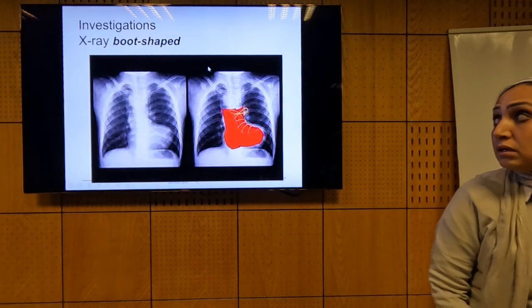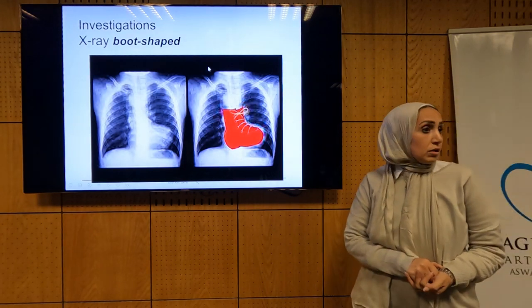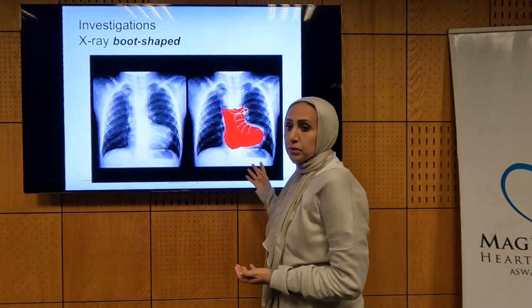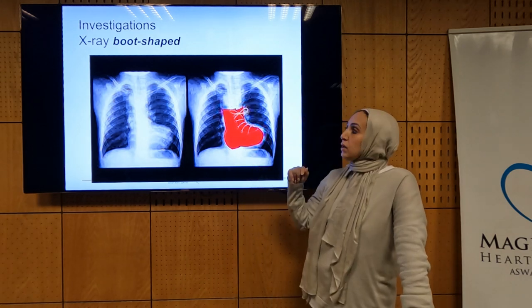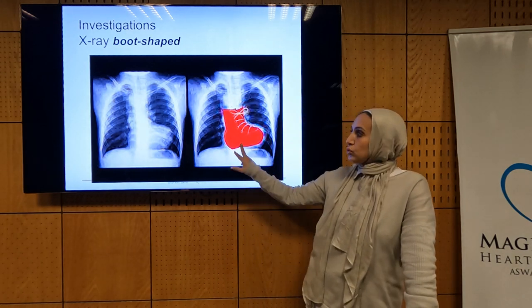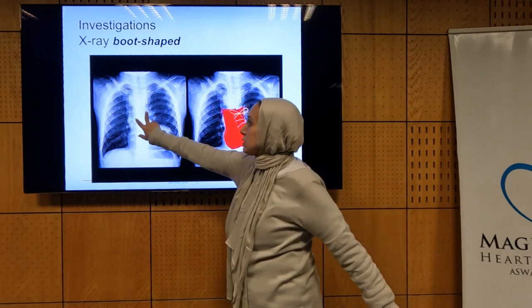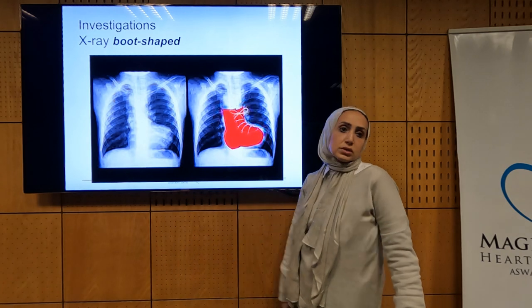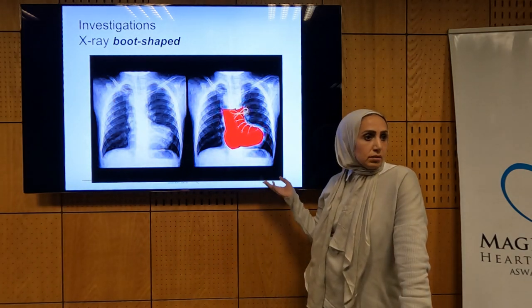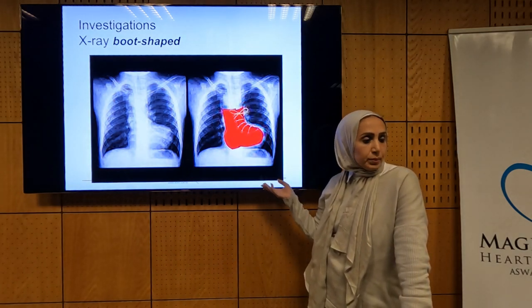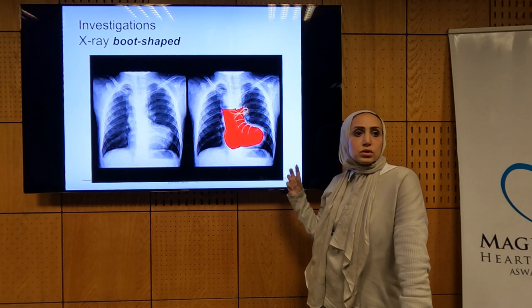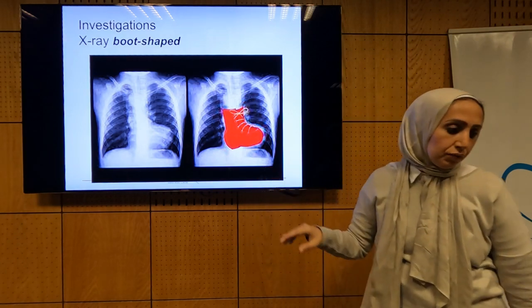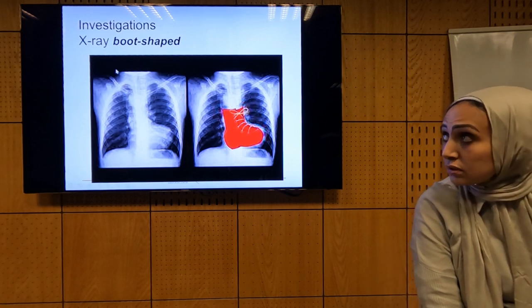On chest X-ray, there is a very famous appearance in Tetralogy of Fallot: the boot-shaped or coeur-en-sabot appearance. The mediastinum is small compared to the size of the heart. Why? Due to the small size of the pulmonary artery. This is very characteristic for Tetralogy of Fallot on X-ray.